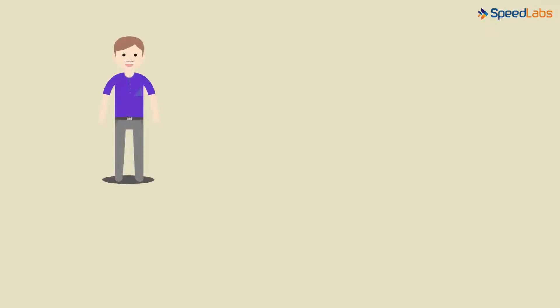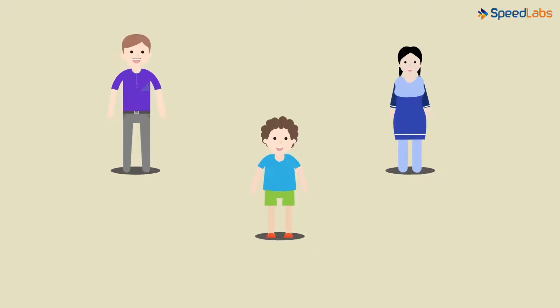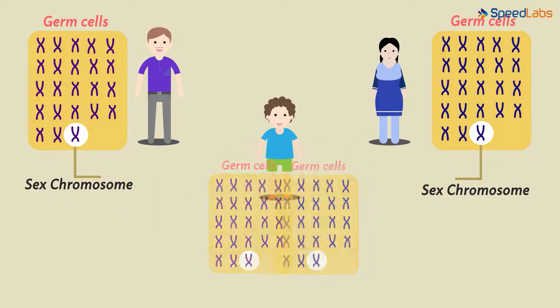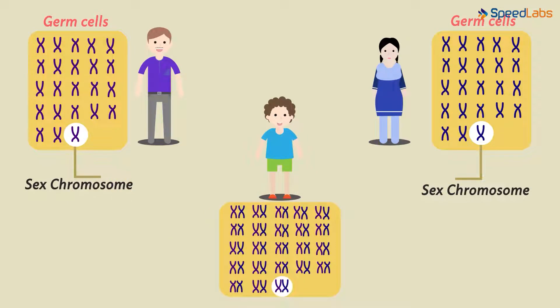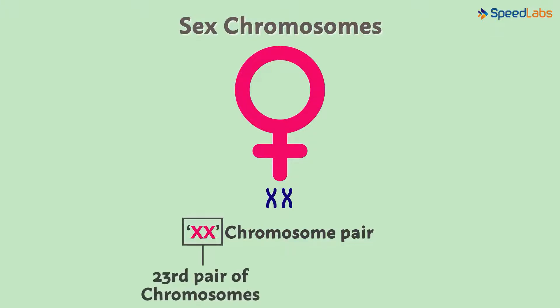Humans require a male parent and a female parent to give rise to a new individual. As we have already studied, the human germ cells do not have a pair of sex chromosomes. Each child receives one copy from the mother and one from the father. They together make up a pair, establishing the natural pair of chromosomes in a cell. All females have a perfect pair of sex chromosomes in their cells, called the XX chromosome pair. Each chromosome is named with the letter X, and both together make up the 23rd pair of chromosomes.